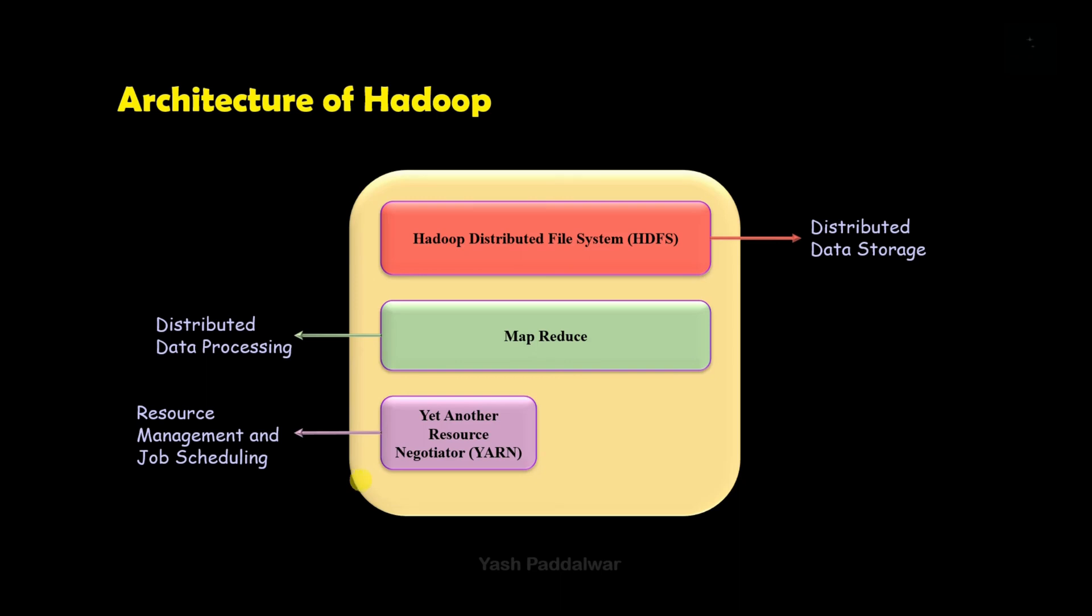Now the next component of the Hadoop architecture is the Hadoop Common Utilities. These Hadoop Common Utilities are libraries or files that are developed purely in Java language. And these files do the work of supporting all the components inside the Hadoop architecture for easy and better execution of storage and processing of the data.